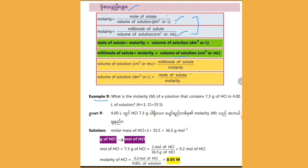What is the molarity of a solution that contains 7.3 grams of HCl in 4.00 liters? The molarity of the solution is 7.3 grams of HCl, which gives approximately 6.0 mol, meaning the molarity is calculated from 7.3 grams of HCl.